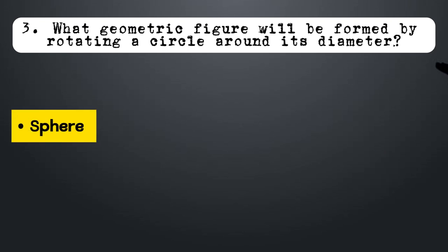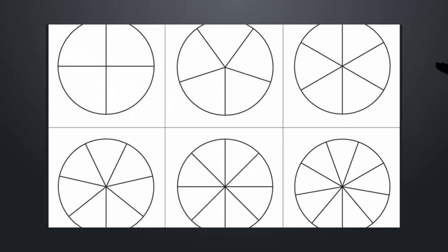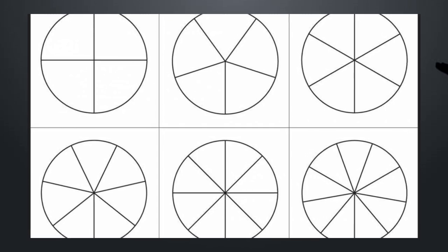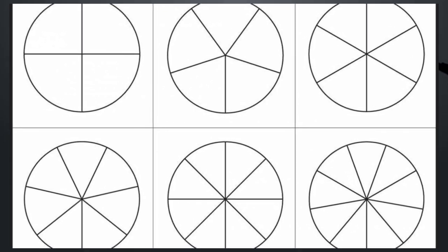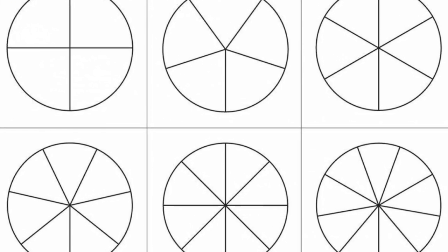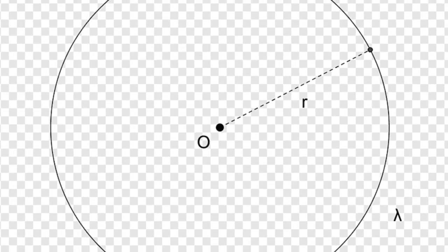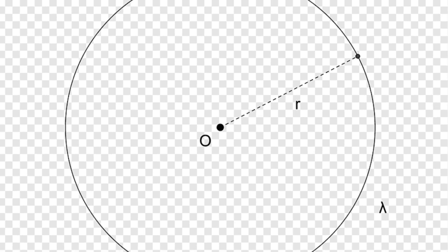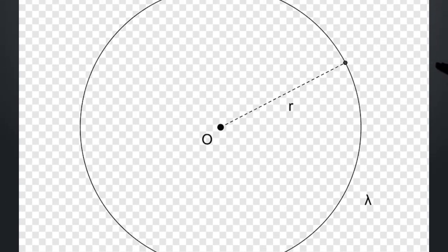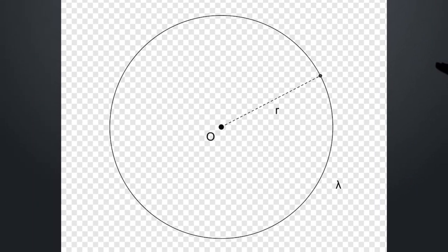A sphere is a three-dimensional figure formed by rotating a circle around its diameter for 180 degrees, or a semicircle around its diameter for 360 degrees.